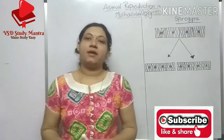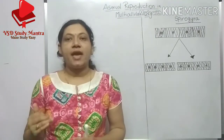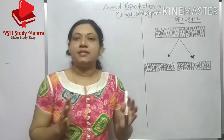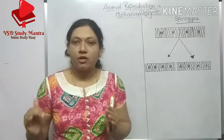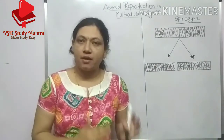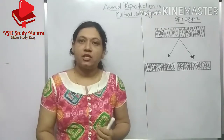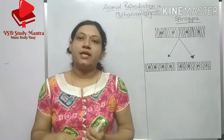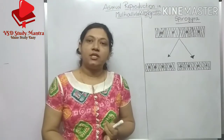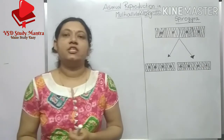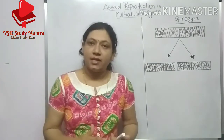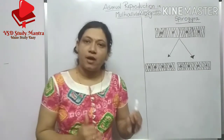Hello students. In the previous session we studied asexual reproduction in unicellular organisms. We covered all the unicellular organisms and how they reproduce — binary fission, including simple binary fission in amoeba, transverse binary fission in paramecium, and longitudinal binary fission in euglena.